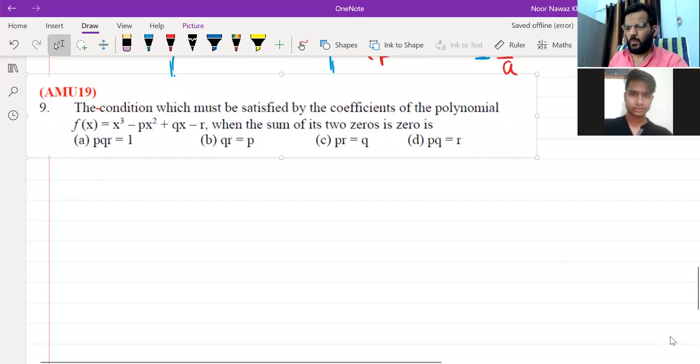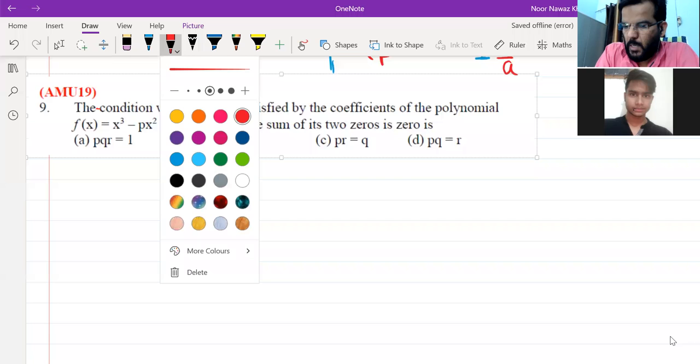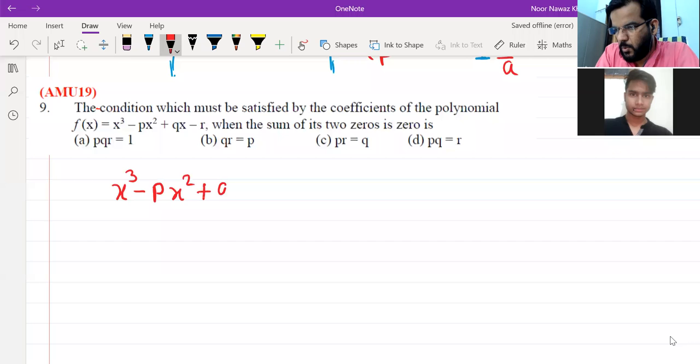what is given? Then we will talk about it. The question is, the condition which must be satisfied by the coefficient of the polynomials when the sum of its two zeros is zero. What is the polynomial? The polynomial is x cubed minus px squared plus qx minus r. This is what we have.